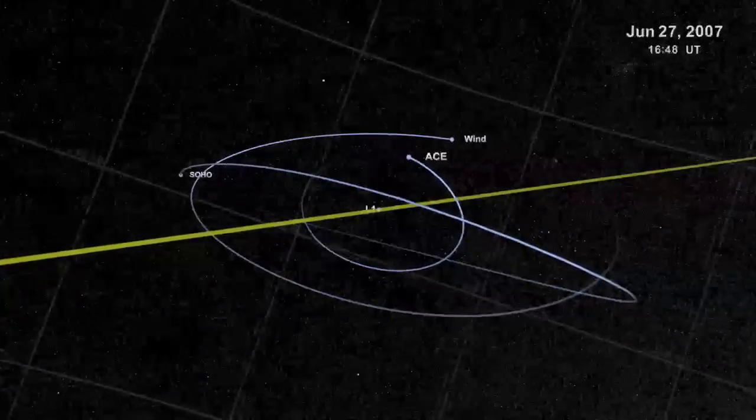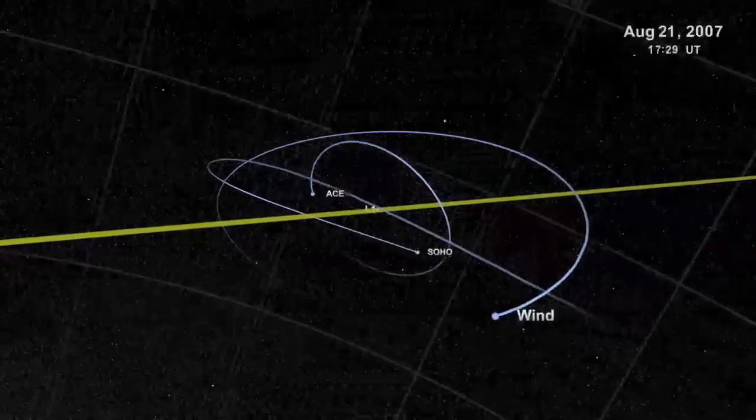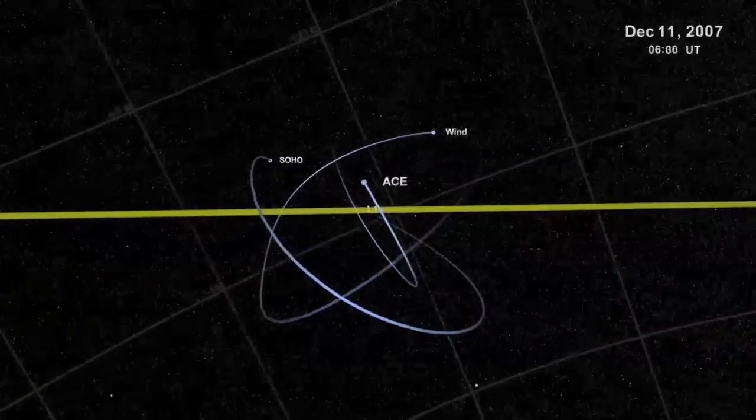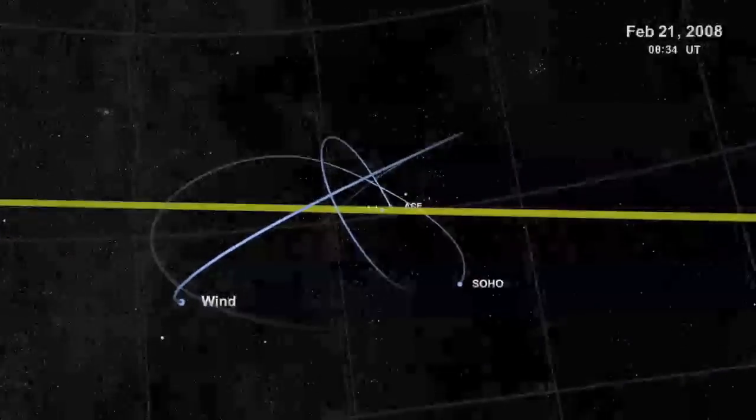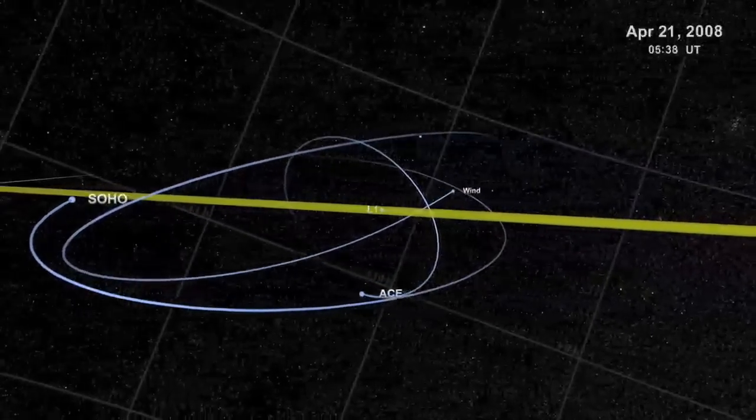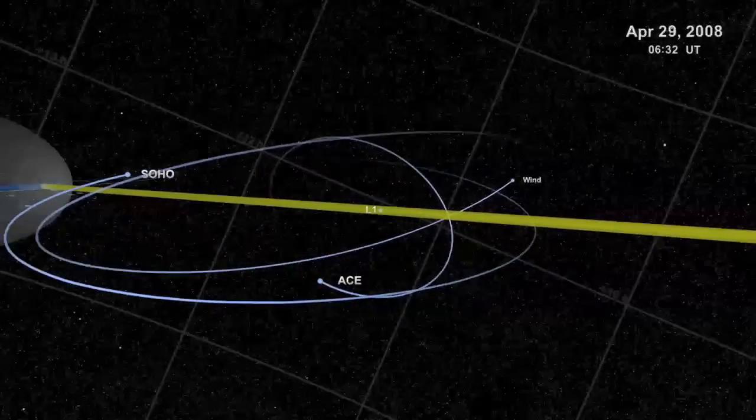But sometimes travel is not the goal. Sometimes it pays to park. Welcome to a Lagrange point. This one, L1 in space speak, denotes a relative position between the earth and the sun, where the gravitational pull of each object is in approximate balance.